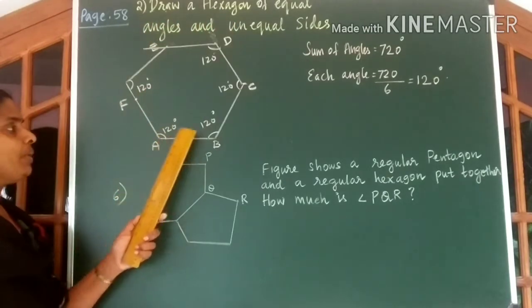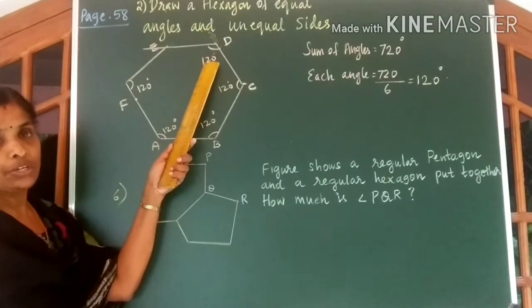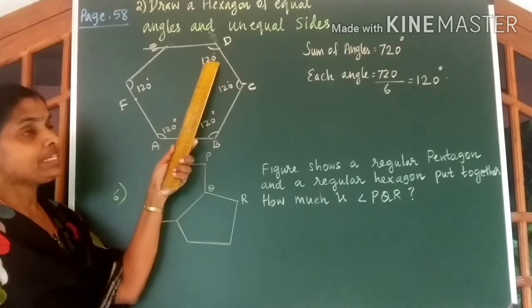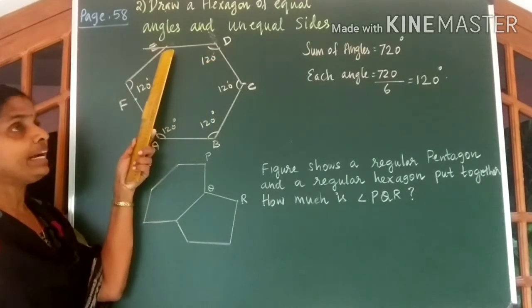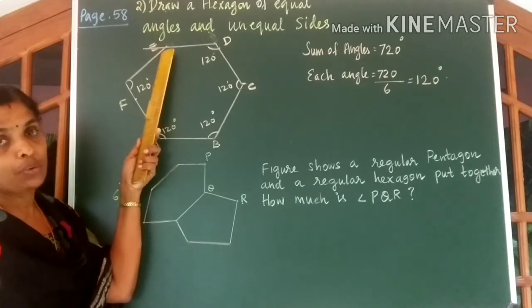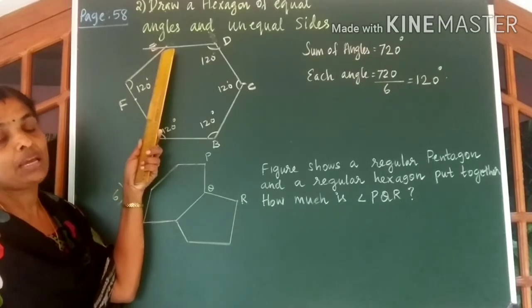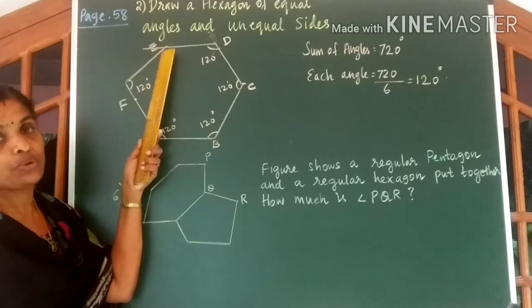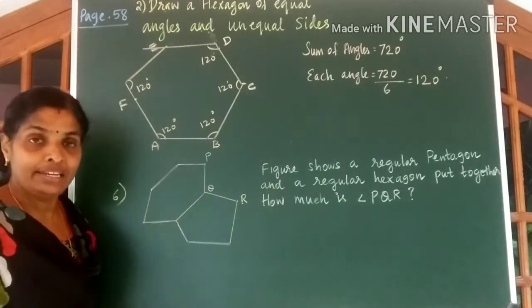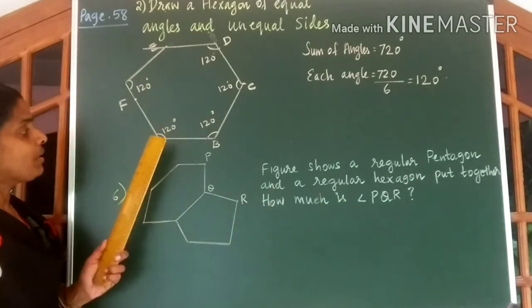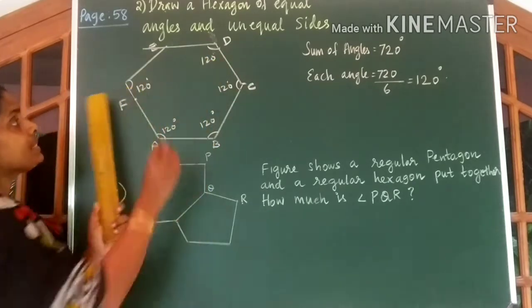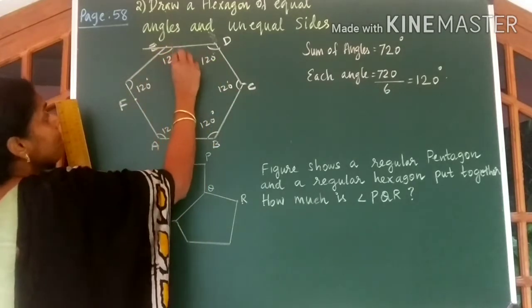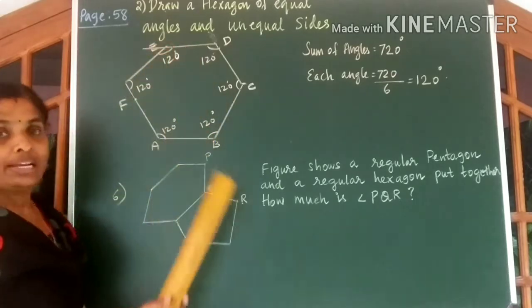If you add these angles, you get 120 into 5, 600. Therefore the sixth angle will be equal to 720 minus 600 which is going to be 120 degrees. We got a hexagon with all angles equal now but sides are not equal.